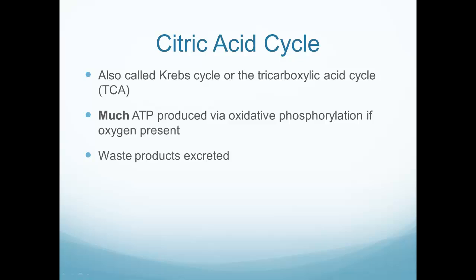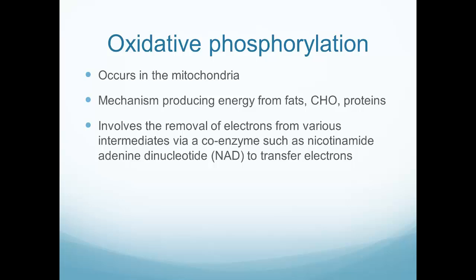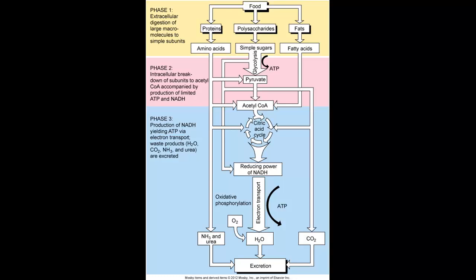The body can use anaerobic metabolism for a while, but it won't hold on forever. We need the citric acid Krebs cycle working. What happens in this cycle is the process of oxidative phosphorylation, which produces energy from metabolism of fats, carbohydrates, and proteins. Let's take a look at this diagram — the main thing to recognize is the difference between the top and the bottom.